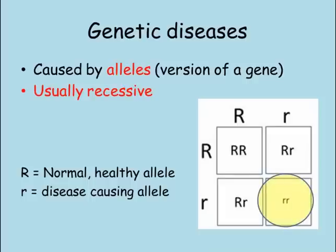This is how two healthy parents are able to produce a child with a recessive genetic disease. The Punnett square shows two parents who are both carriers have a 25%, or 1 in 4, chance of producing a child with the disease.